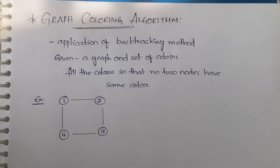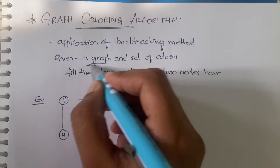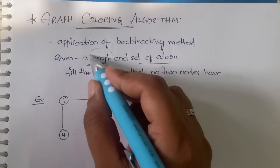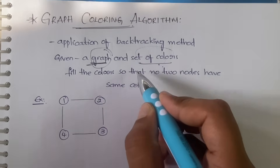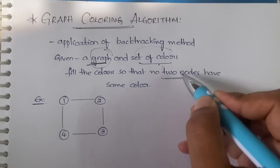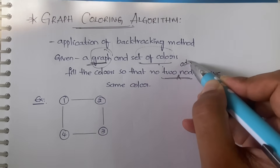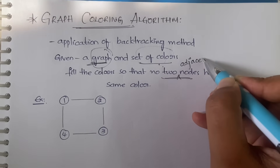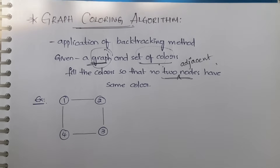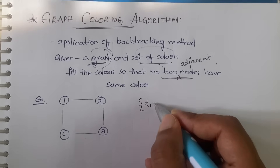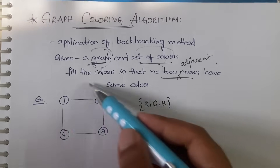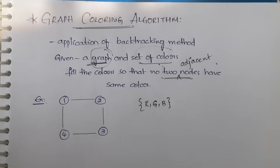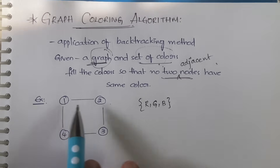This is going to be the last video on applications of backtracking. In graph coloring, you are given a graph and some colors, and you need to fill the graph with those colors such that no two adjacent nodes have the same color. For example, you have a graph and the set of colors given to you is red, green, and blue.